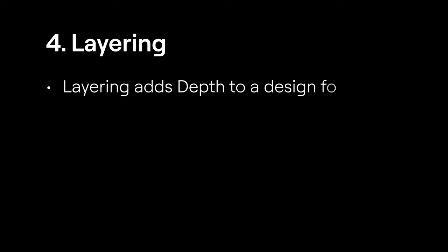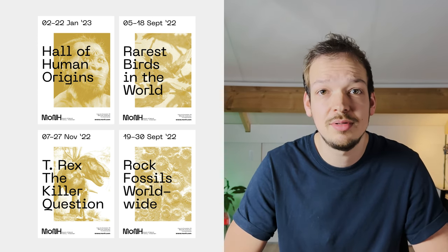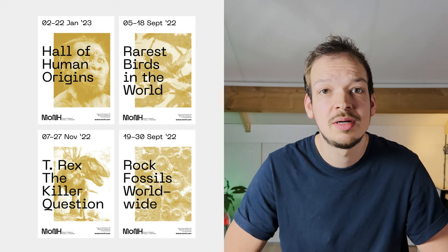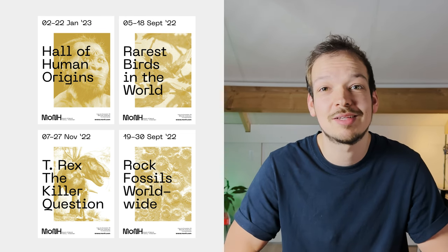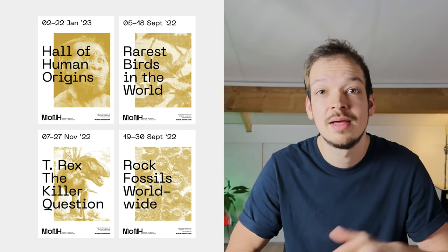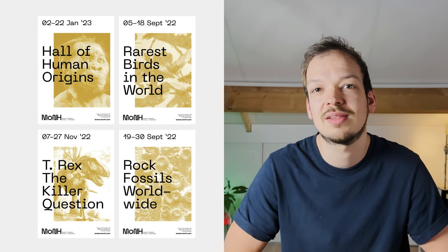Fourth is layering. Layering adds depth to a design for visual interest — think of it as the magic wand that transforms your design from flat to fascinating. For example, in the poster I created for the Museum of Natural History, the text dances gracefully over a captivating photo, like peeling back layers from a story and making the design pop with life. In that MONH poster, the text isn't just placed on top — it becomes part of the picture, as if the title and the image are holding hands, telling everyone they belong together. It's a clever way of saying these elements are connected — a secret sauce that ties everything together, making your design not just pretty, but purposeful.